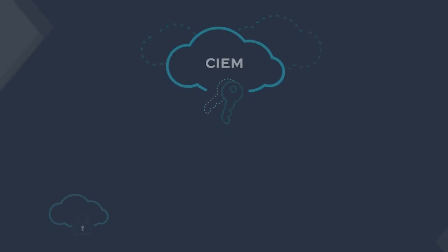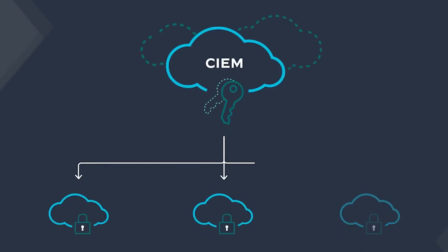Then you have to set a reminder to track that person down at the end of each week to see if and when they plan on coming back to the office. So long story short, this is what it's like managing cloud entitlements. CIEM helps to address these issues by reducing the amount of excessive cloud infrastructure entitlements and streamlining least privileged access controls across all of your cloud environments.